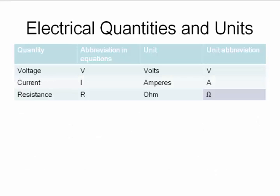The abbreviation for voltage is V, current is I, resistance is R. Units are V, A and ohms.